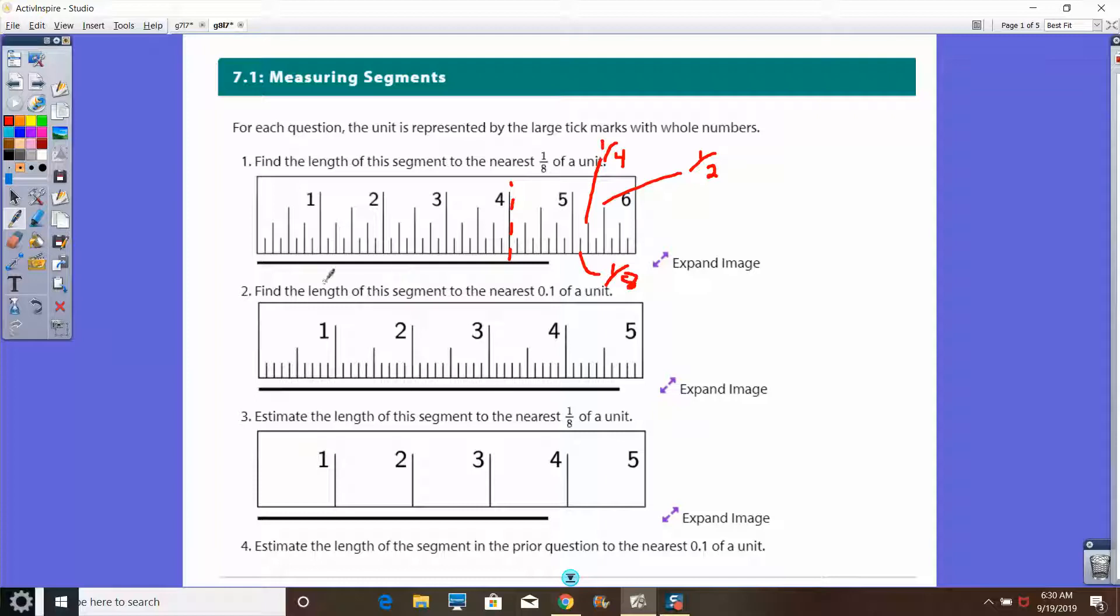Number two here, we've got find the final length of the segment to the nearest 0.1 of a unit. This right here, this is a centimeter ruler, so each one of these lines, the smaller lines, is a tenth of a centimeter, and then the longer line here is a half of a centimeter. Each of these lines is actually one millimeter because one millimeter is a tenth of a centimeter.